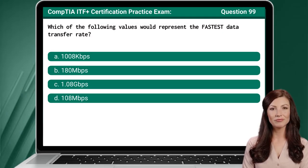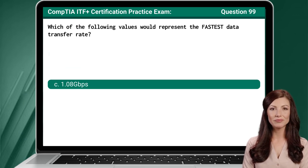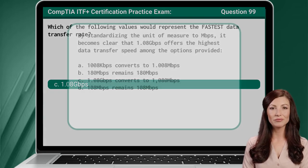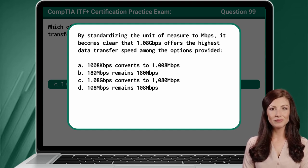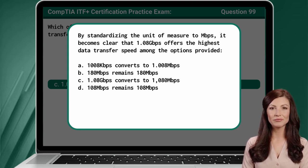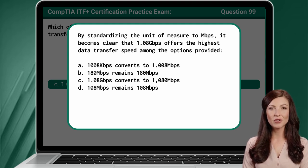Question 99. Which of the following values would represent the fastest data transfer rate? The answer is C: 1.08 gigabits per second. By standardizing the unit of measure to megabits per second, it becomes clear that 1.08 gigabits per second offers the highest data transfer speed among the options. Option A: 1.008 gigabits per second converts to 1,008 megabits per second. Option B: 180 megabits per second remains 180 megabits per second. Option C: 1.08 gigabits per second converts to 1,080 megabits per second. Option D: 108 megabits per second remains 108 megabits per second.